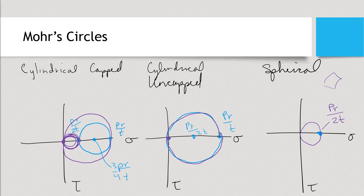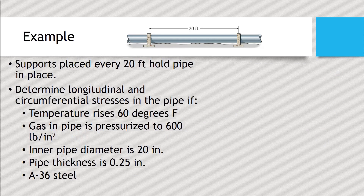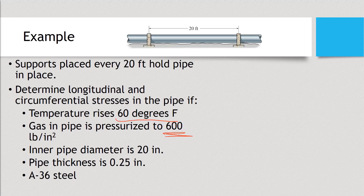So the spherical vessel — technically it's experiencing the least shear stress. Yes. For this example, we have a pipe that is supported every 20 feet, and those supports do not allow the pipe to move at that location. We want to determine the longitudinal and circumferential stresses if we have pressurized liquid at 600 psi, and while this pressurized liquid is flowing, we have a temperature rise of 60 degrees Fahrenheit. The inner pipe diameter is 20 inches, pipe thickness is a quarter inch, and we have A36 steel.